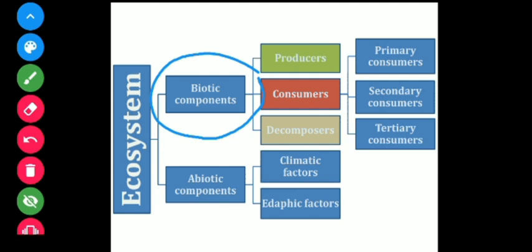To avoid confusion about which organisms to keep in mind, the biotic components have been categorized into producers, consumers, and decomposers on the basis of their mode of nutrition. Producers are those which can produce; consumers will not produce but consume and are not independent; and decomposers decompose and degrade organic matter.